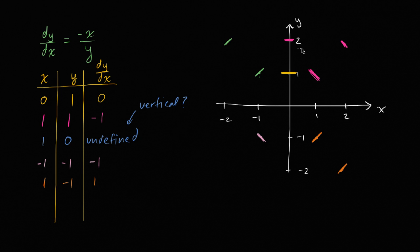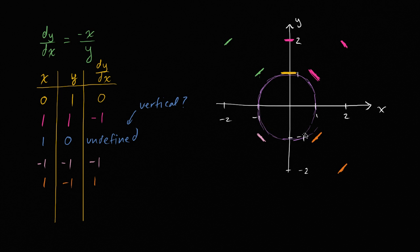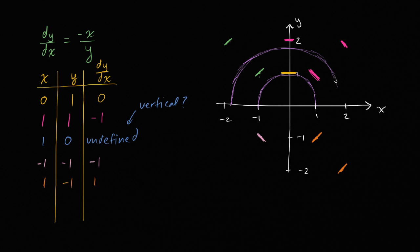When you keep drawing these line segments over these sample points in the xy-plane, you start to get a sense of what a solution would have to do. You can start to visualize that a solution would have to do something like this. Maybe it would have to do something like this — or if we're looking only at functions and not relations, maybe it would have to do something like this. And I'm doing this based on what the slope field is telling me.